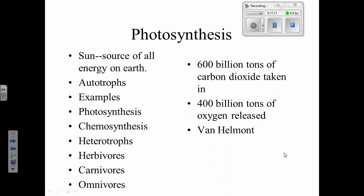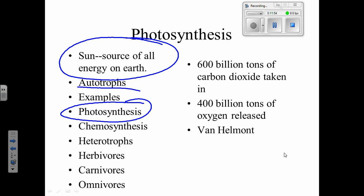Pretty much all the energy on Earth comes from the sun. When you eat beef, you're still eating sun energy — because the cow ate grass that got energy from the sun. So you got it a couple of steps along the way but you're still eating sun energy. We already talked about autotrophs — those are self-feeders. Most of the time autotrophs are things that do photosynthesis: plants, some bacteria, algae.